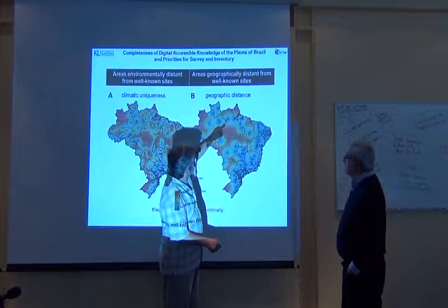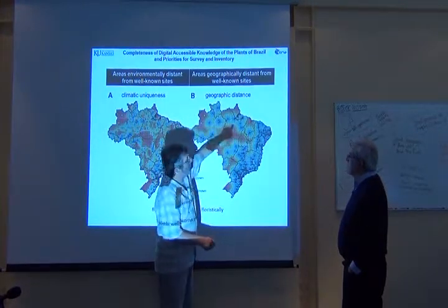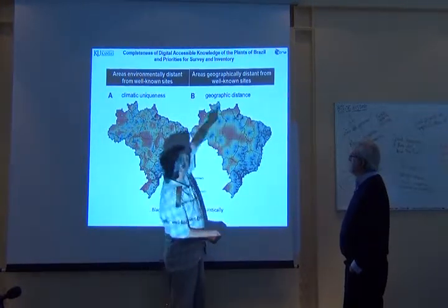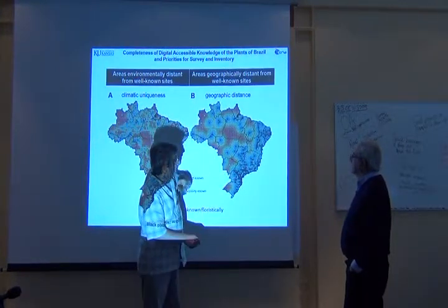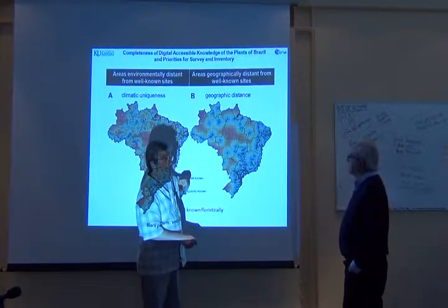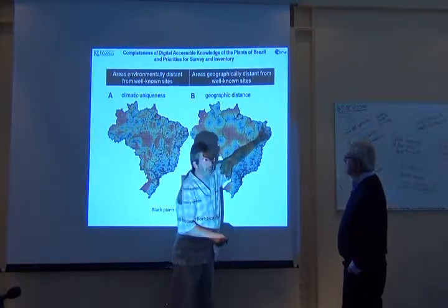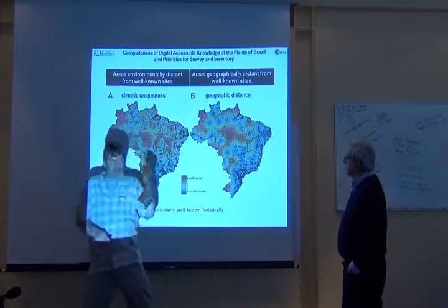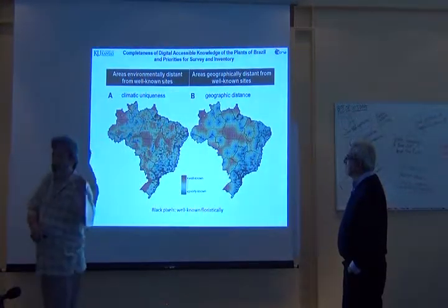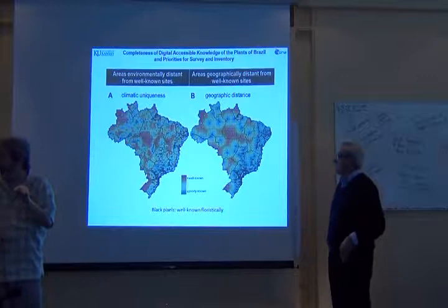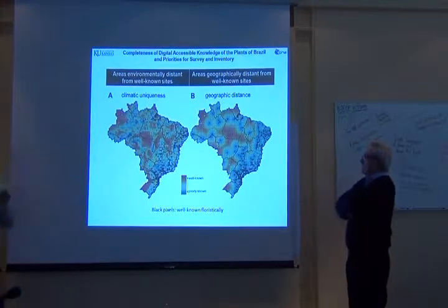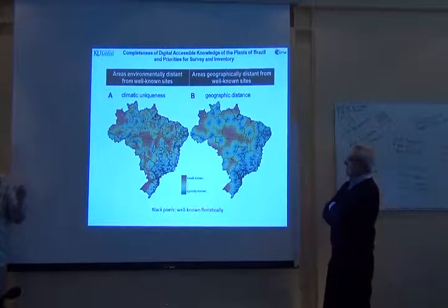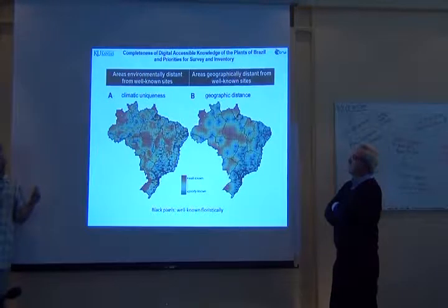You can see this gap here is the biggest one. All the way around the rim of Brazil we have a lot of red, but here in the east we really don't have any places that are geographically, spatially far from a well-characterized pixel.